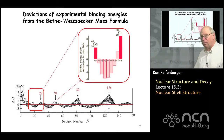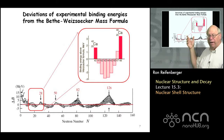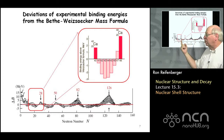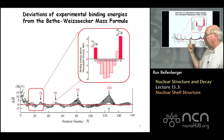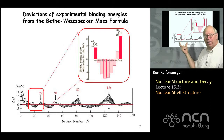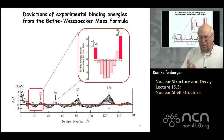If you look at deviations of the experimental binding energies from the Weisacker mass formula, this chart shows local deviations in the binding energy from the empirical formula. These peaks in the binding energy again occur for neutron numbers of 28, 50, 82, and 126 — another indication that nuclei containing these magic numbers of neutrons produce a very stable nucleus.